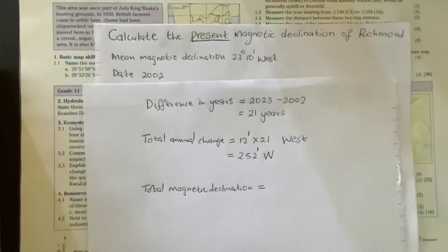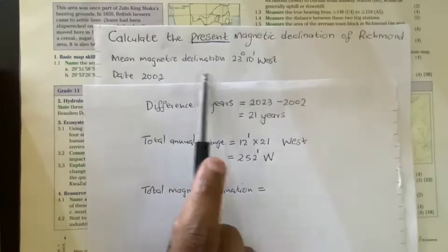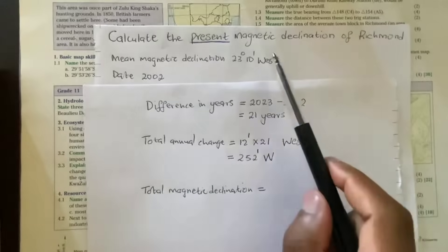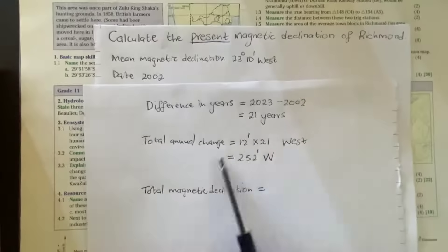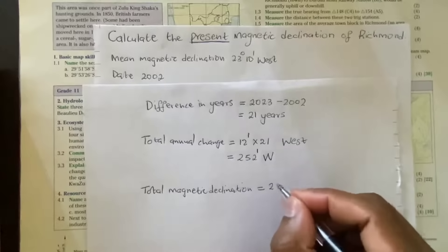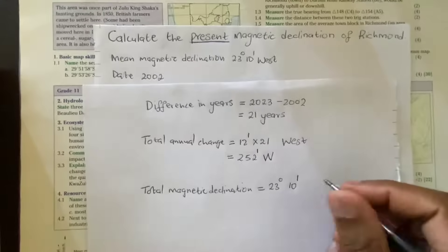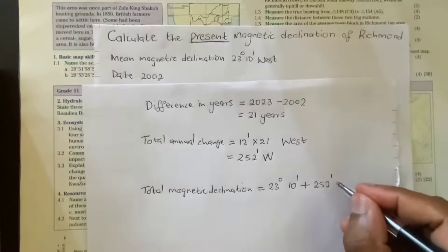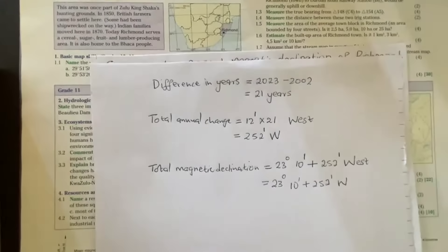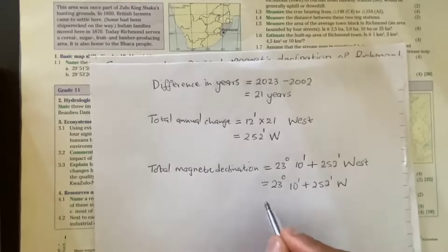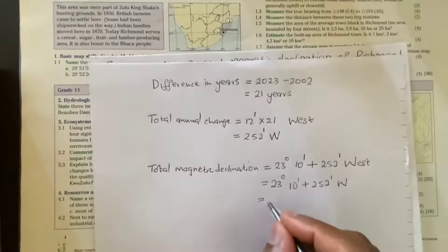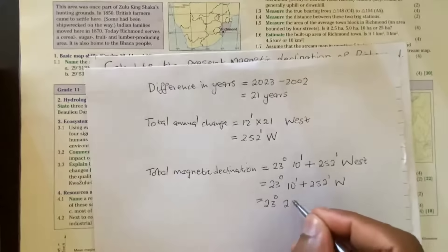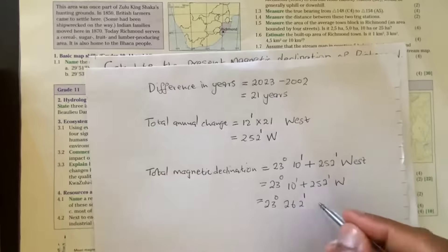To calculate the total magnetic declination, you take your mean magnetic declination and add it to the total annual change. We add because both directions are west. So: 23 degrees 10 minutes west plus 252 minutes west. Degrees stay as 23 degrees. Minutes: 10 plus 252 gives us 262 minutes west.